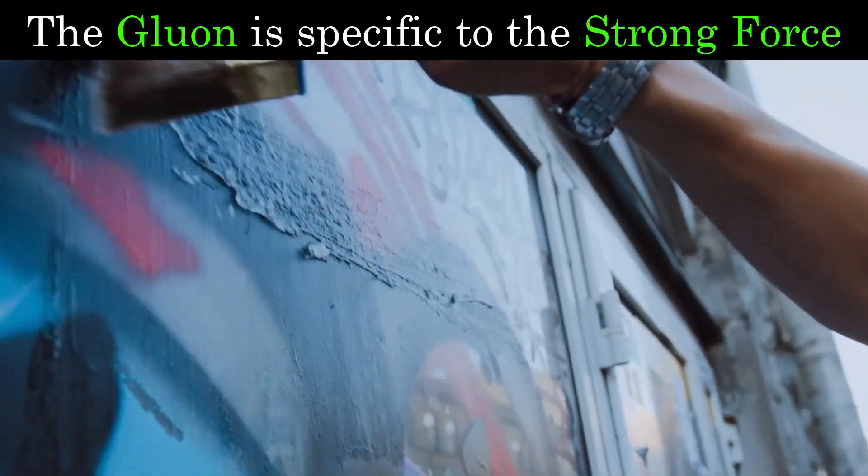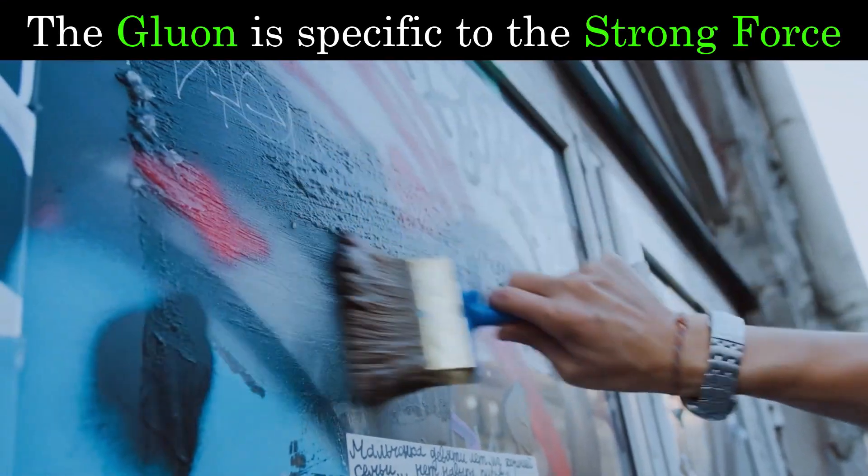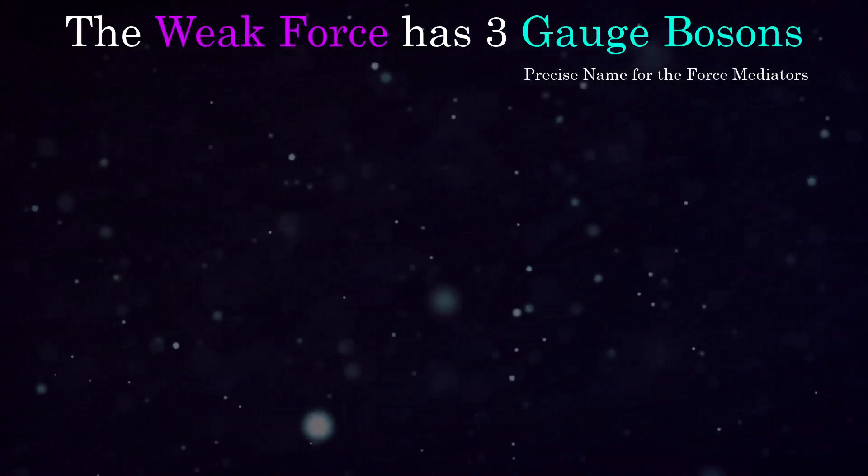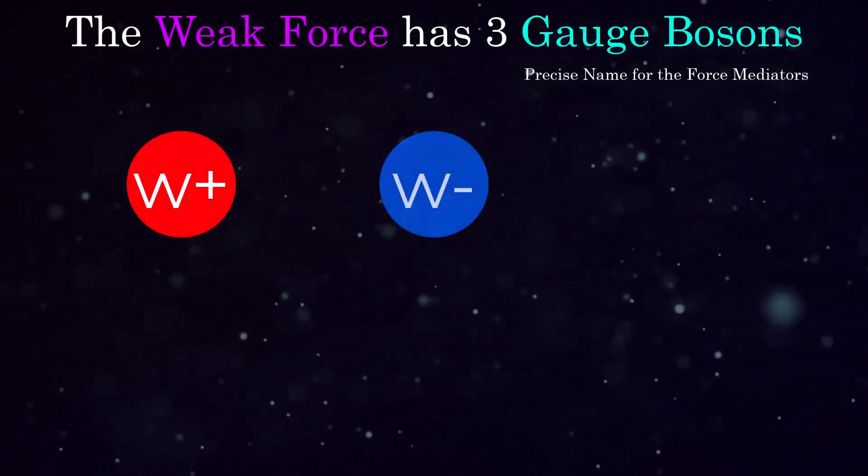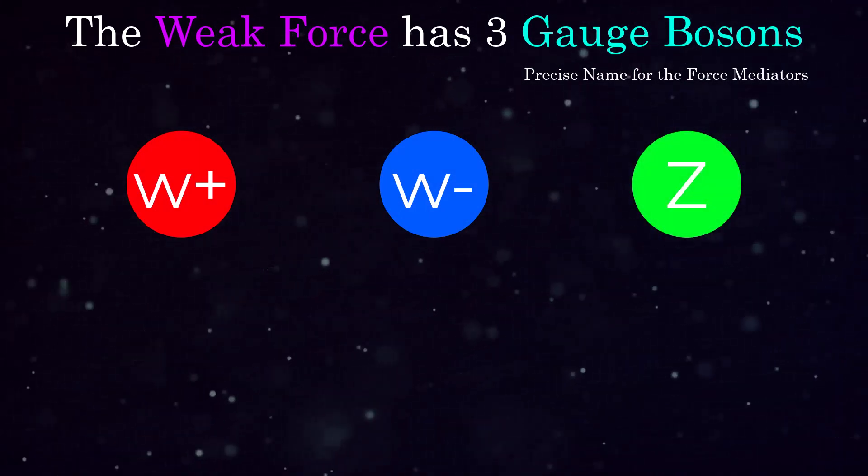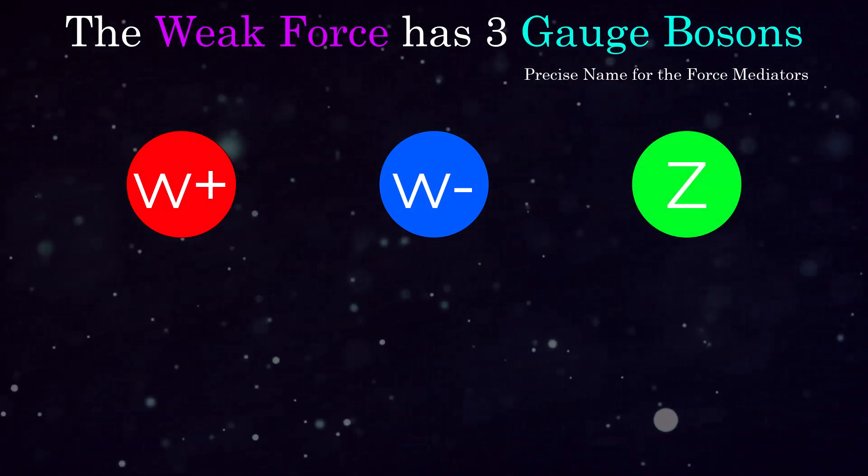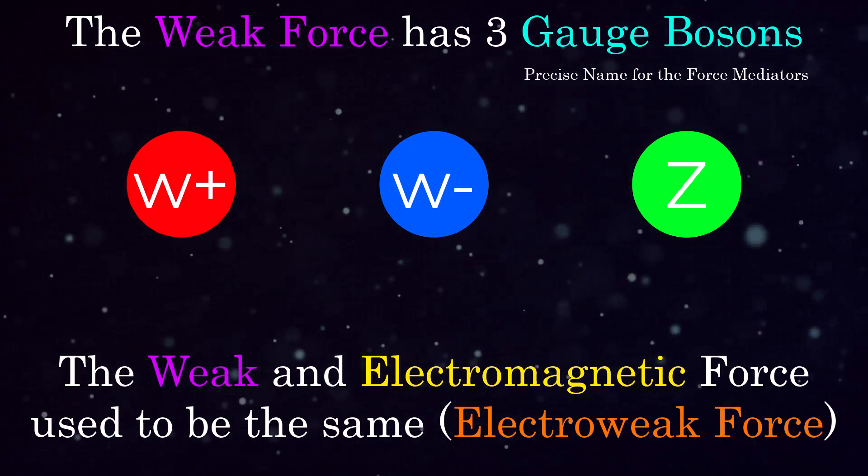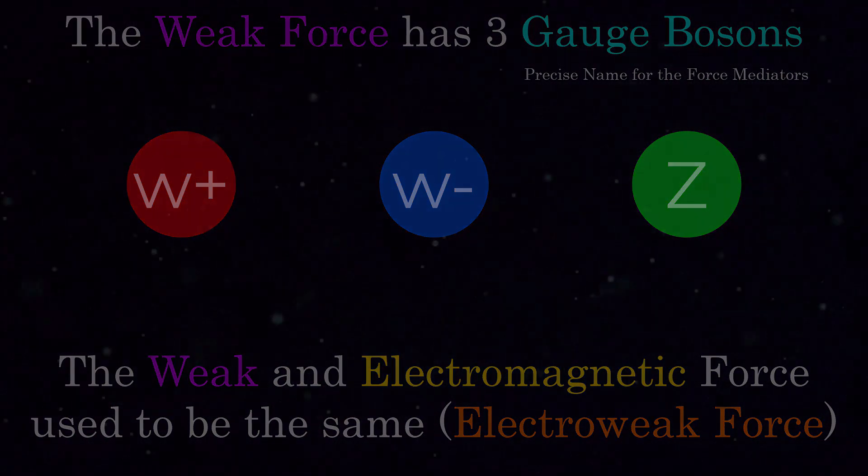For the strong nuclear force, the gauge boson is known as the gluon, as they glue quarks together inside nucleons. The weak force has three bosons, being the W+, W-, and Z0 bosons. The reason the weak has three bosons is complicated, and due to symmetry breaking of a combined electro-weak force back in the early universe when conditions were extremely hot.